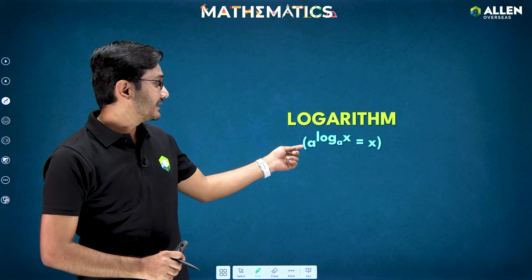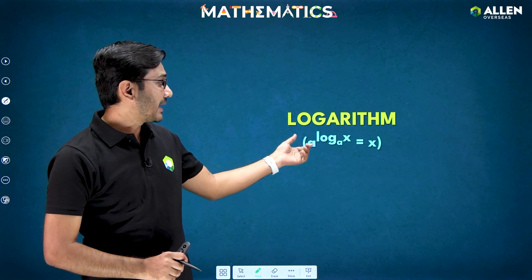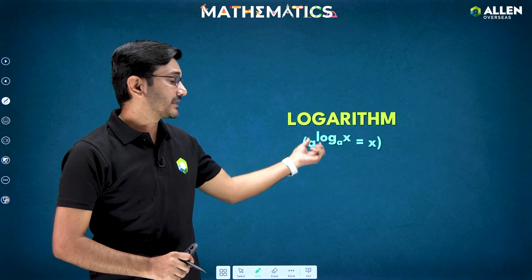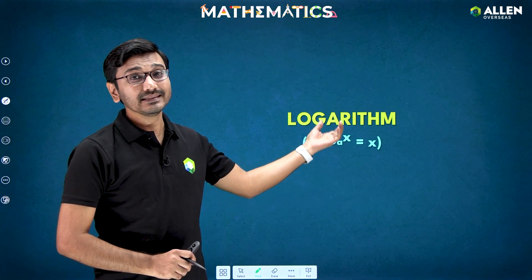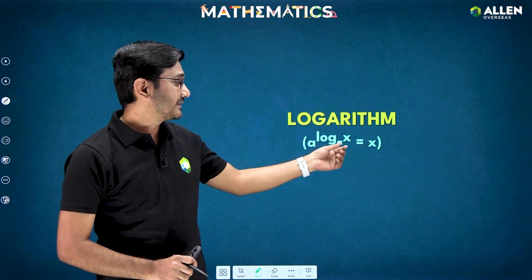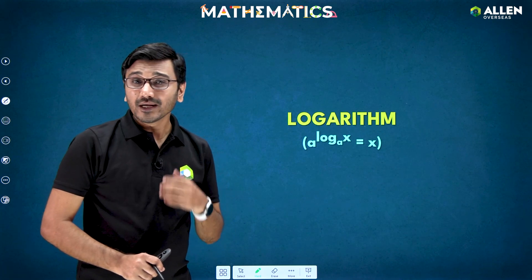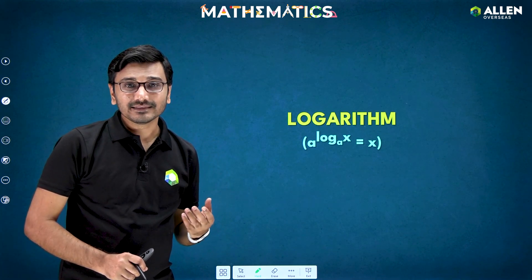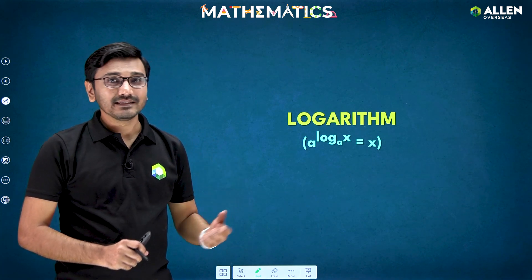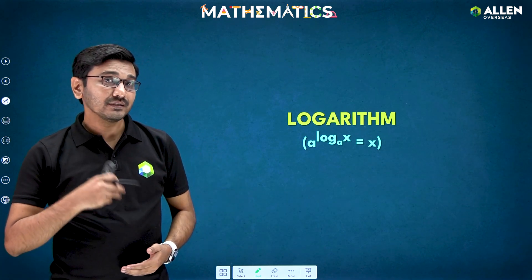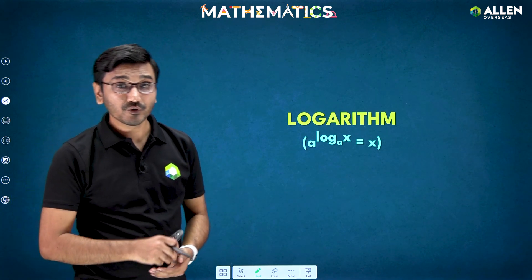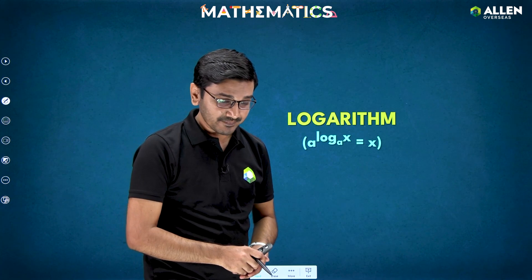The formula is: a to the power log of x to the base a is equal to x. So we are just getting this x term as a result. Why do we get it like this? That we'll see in this video and we'll definitely see a few questions based on this.